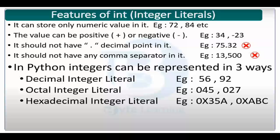Integers are numerical values without any decimal point - for example 72, 84, 100. If we store 'a = 72', then a is an integer variable. We generally create integer variables to store age, quantity, sales, number of people, etc. Integers can be positive or negative - for example 'temp = -10' stores a negative temperature and 'temp = 50' stores a positive value.